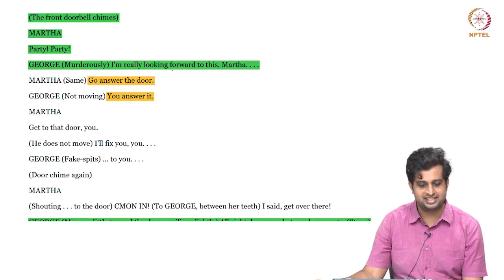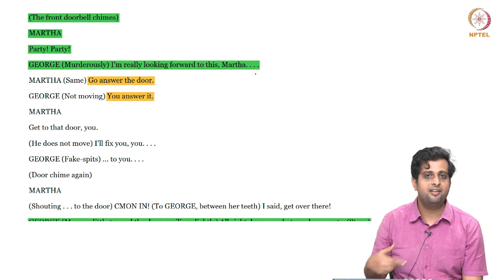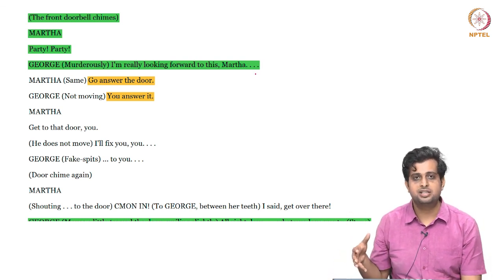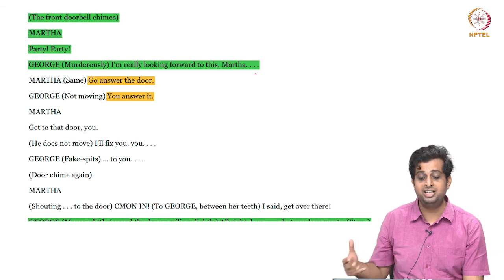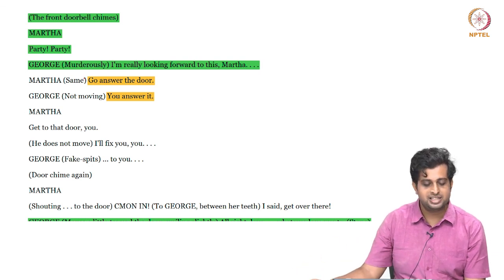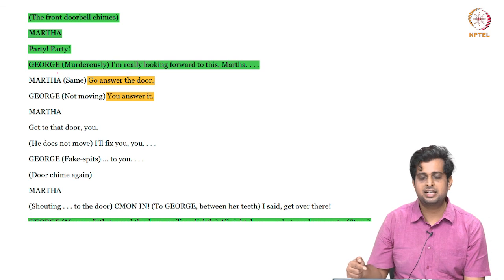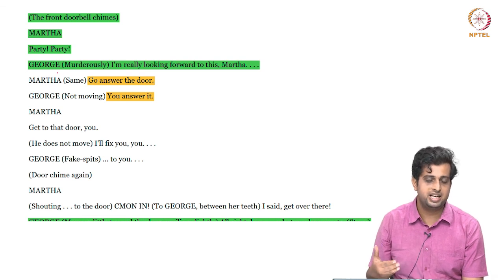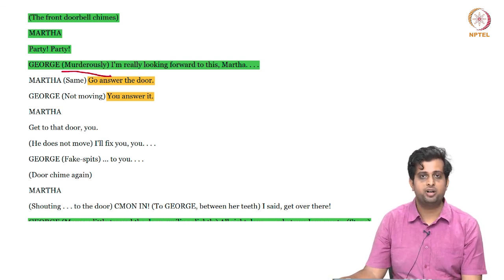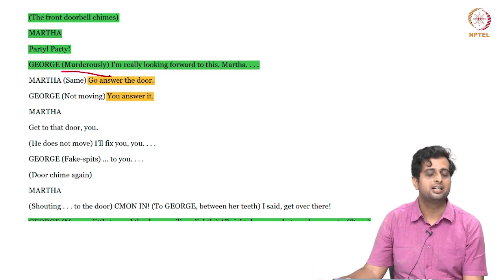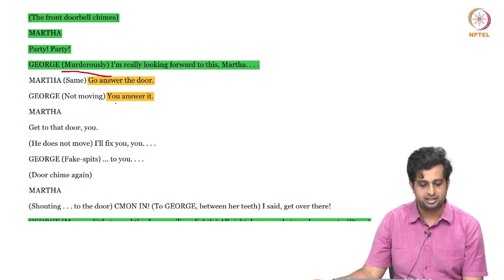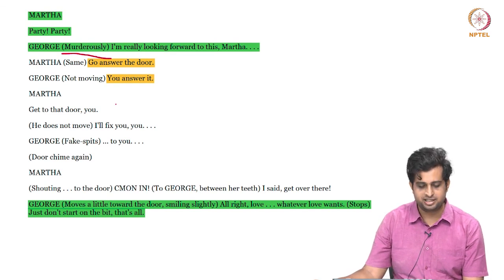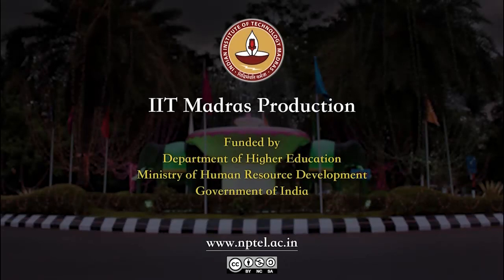George says murderously, 'I'm really looking forward to this, Martha.' The stage direction 'murderously' is important — we know he's not literally meaning what he says. The copious stage directions in the play matter here: he's not at all looking forward to it. I'll end this lecture today, and in the next lecture we'll start with the point where Honey and Nick have come into their house. Thank you.